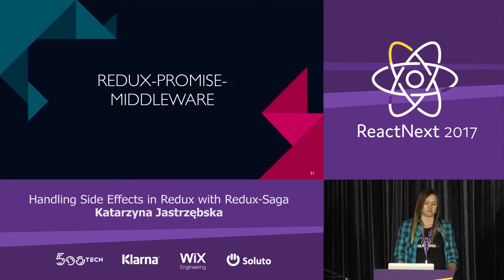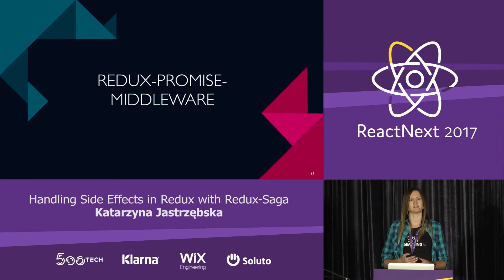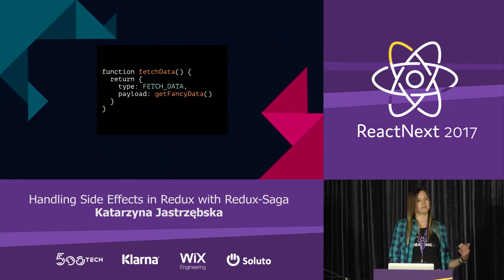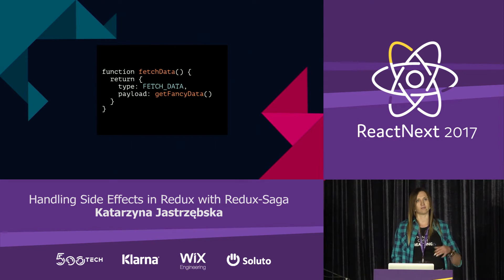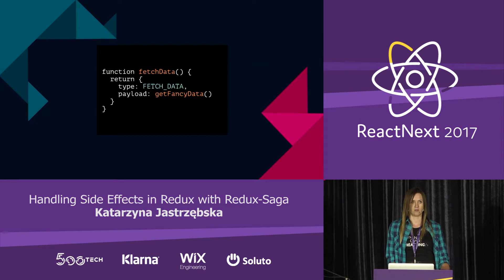Another possible solution that works alongside Redux Thunk is Redux Promise Middleware. It acts as a factory above Redux Thunk — if we pass a Promise in the payload, Redux Promise Middleware will create and dispatch actions for us: an action if the promise is in progress, one if it resolves, and one if it rejects.